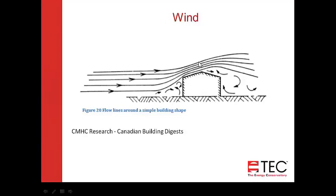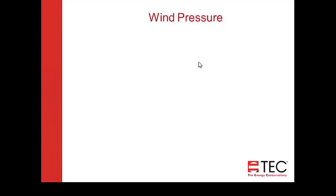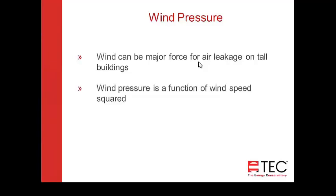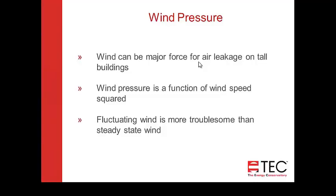This picture came from research done by CMHC and is in the Canadian Building Digest. Wind pressure is definitely a major force for air leakage on tall buildings — we see much higher wind pressures in tall buildings. Wind pressure is a function of wind speed squared, so as wind speed increases, pressures go up dramatically. Fluctuating wind is more troublesome than steady-state wind. With gusting winds, we can see pressure differences of 40 to 50 pascals from one side of a building to another.